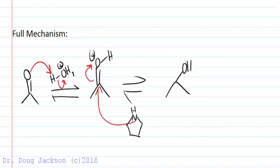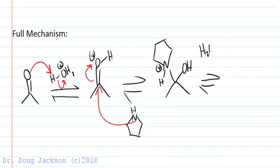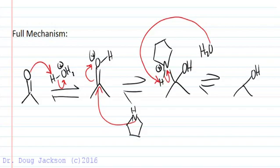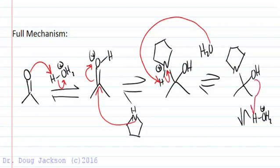When we do this we form a tetrahedral intermediate, as we're used to seeing, and we have to remember that we have a proton to move around — nitrogen gets a plus one formal charge. We can move this proton using water, with a lone pair back on the nitrogen, and then we have this species. Now we've regenerated our acid, so to speak.